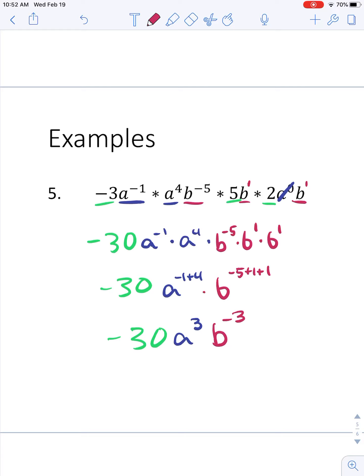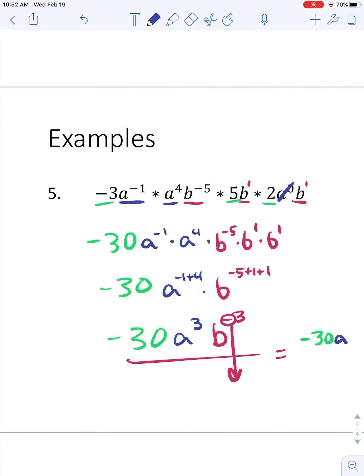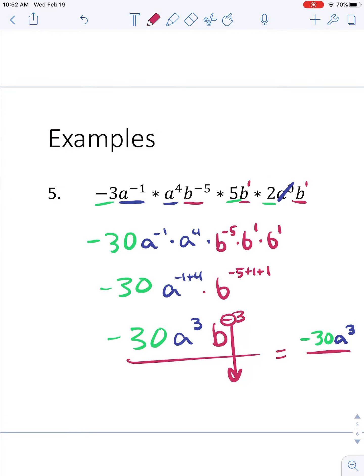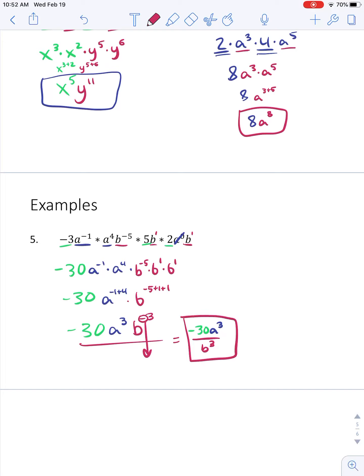But I'm not allowed to end the problem with a negative exponent. So I'm going to take this and move it to the bottom of the fraction. I'm still going to have this negative 30 up top. I'm still going to have an a cubed up top. And now I have a b to the 3rd down on the bottom. And that's going to be our final answer. So sometimes there's a lot of work that goes into one of these problems.